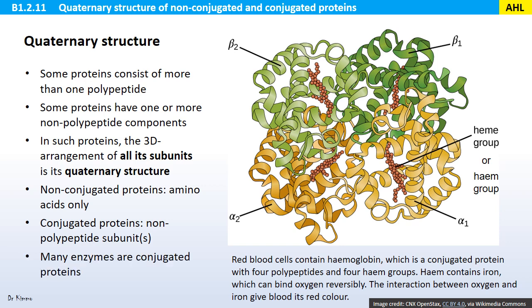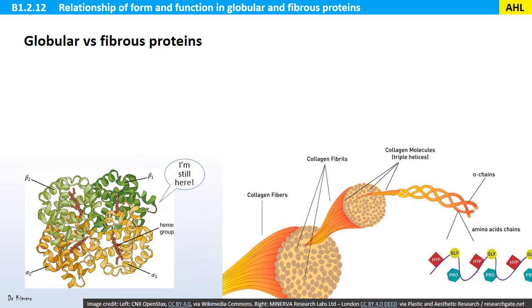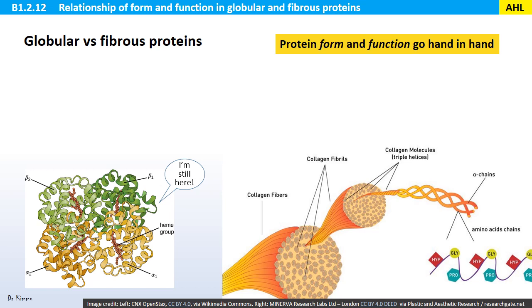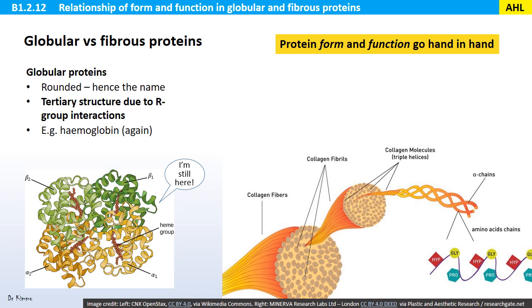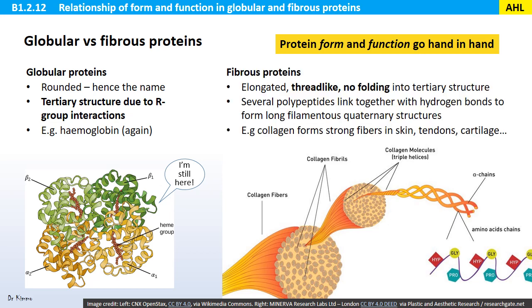Before we finish, let's consider the relationship between form and function in proteins — they go hand in hand. Globular proteins are rounded and have a tertiary structure due to R-group interactions; hemoglobin is one example. Fibrous proteins, on the other hand, are elongated and thread-like with no folding into tertiary structure. Instead, several polypeptides link together with hydrogen bonds to form long filamentous quaternary structures. An example is collagen, which forms strong fibers in skin, tendons, and cartilage.